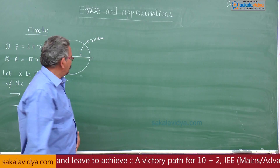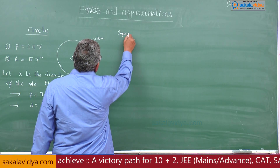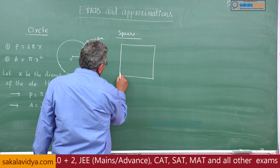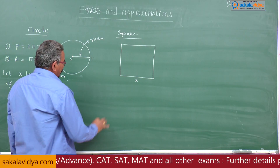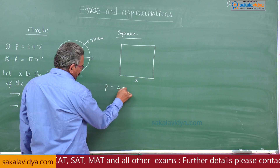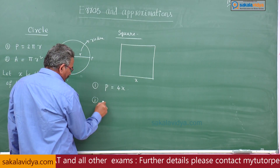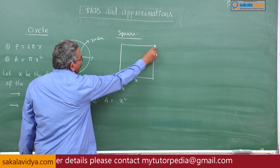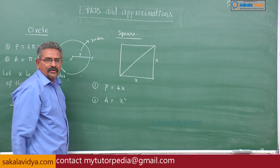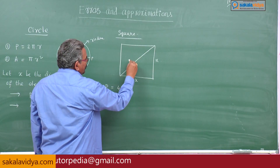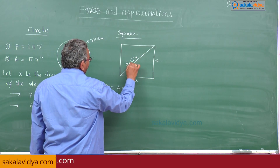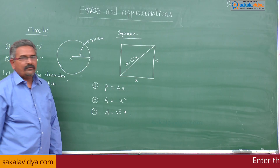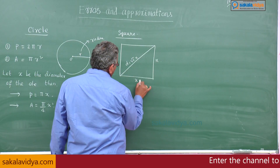Next, let us come to the square. For a square with each side x: the perimeter P is equal to 4x, the area is x squared, and the diagonal, using Pythagoras theorem, is root 2 times x, where x is the side.